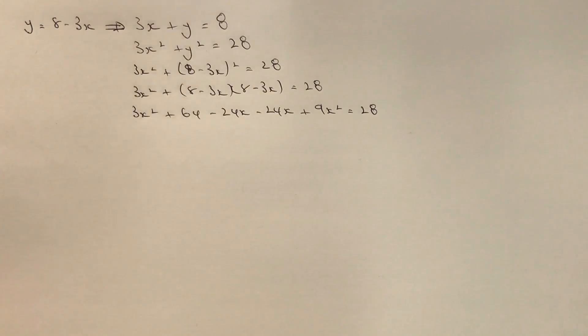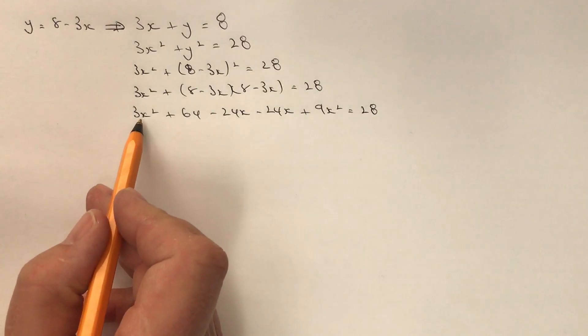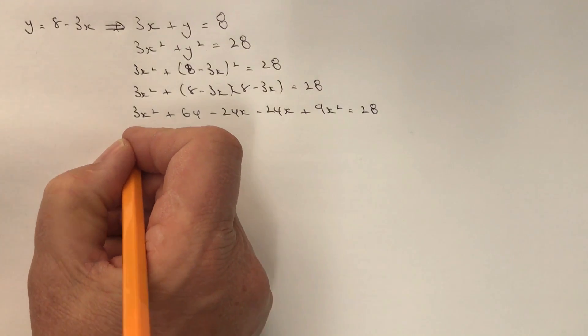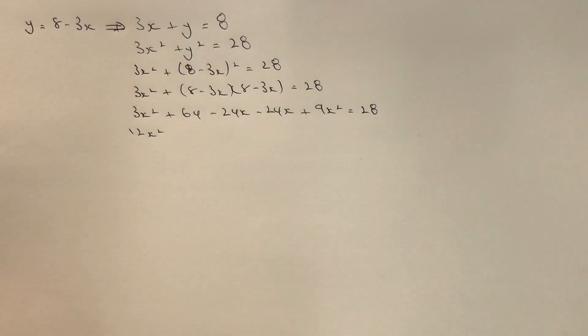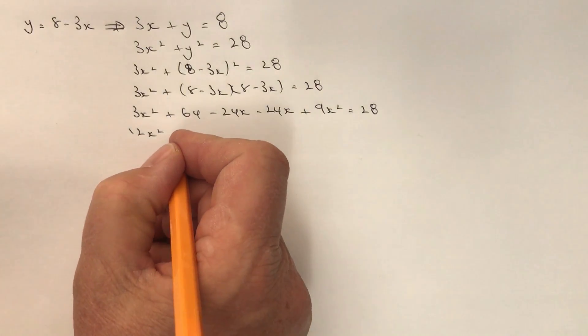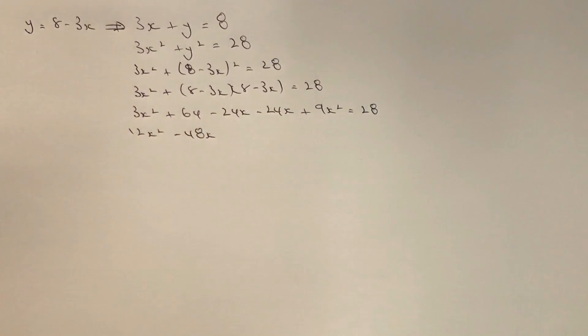Alrighty, then I'm going to collate everything together and gather the like terms. So I've got 3x squared and 9x squared there. If I put those two together, I'm going to get 12x squared, and then I'm also going to get minus 24x and minus 24x, that's going to give me minus 48x. Now actually at this point I'm feeling a little bit more confident because I know that 48 is in the 12 times table, so it looks like we're heading in the right direction.